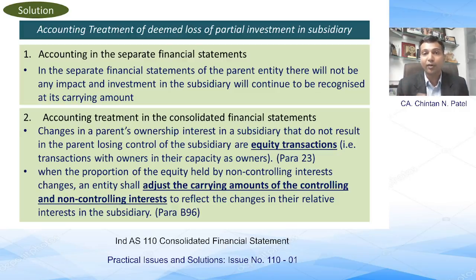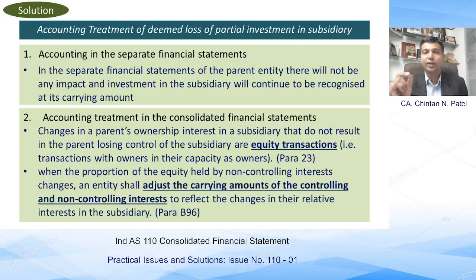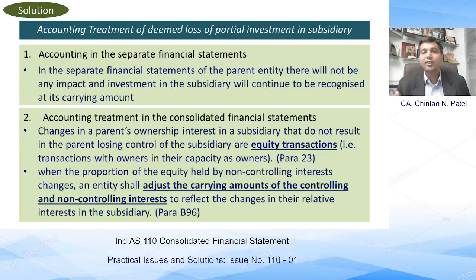Thereby, there is a reduction in the controlling power of the parent entity. As far as paragraph 23 is concerned, it provides guidance that these are called equity transactions, since there is no loss of control and the only change is that the non-controlling interest should be increased. Paragraph B96 of Basis of Conclusions mentions that one has to adjust the carrying amount of the controlling and non-controlling interest. There has to be reallocations within equity — no impact on the profit and loss statement. Only within the equity will there be reallocation of the percentages. In this case, 10% NCI has been increased, so there will be a shift of 10% from controlling to non-controlling.